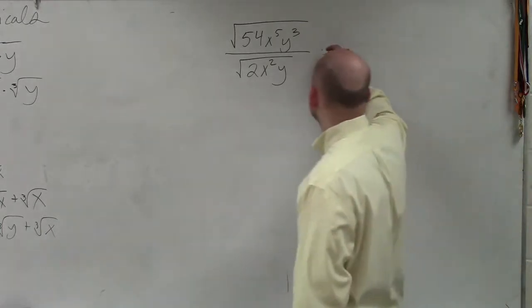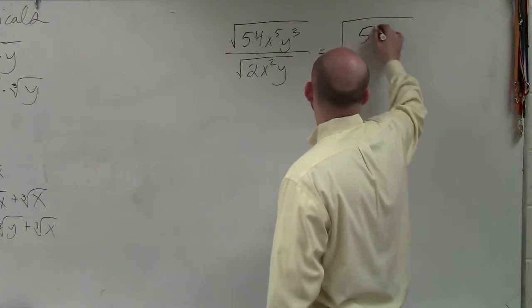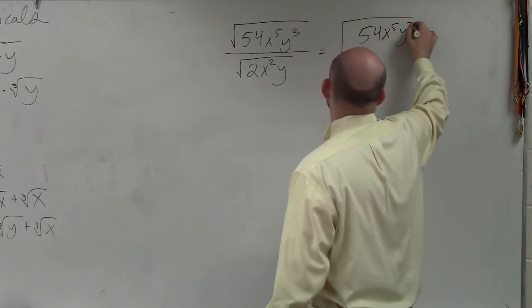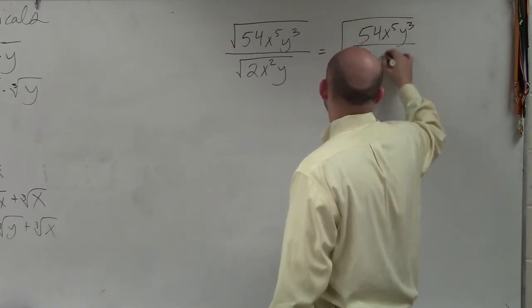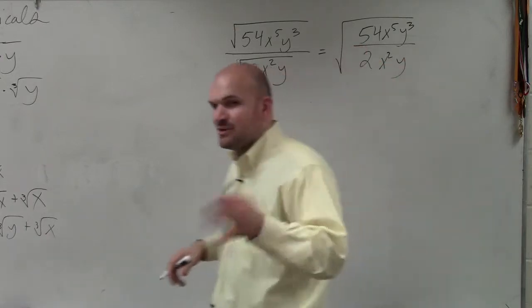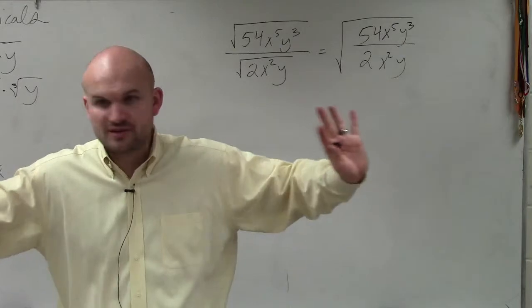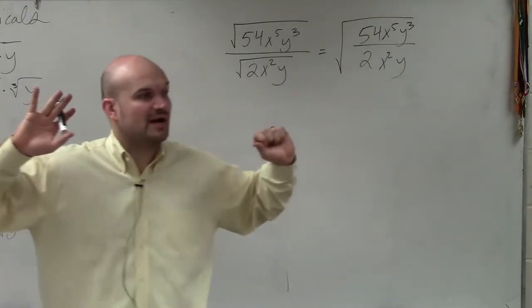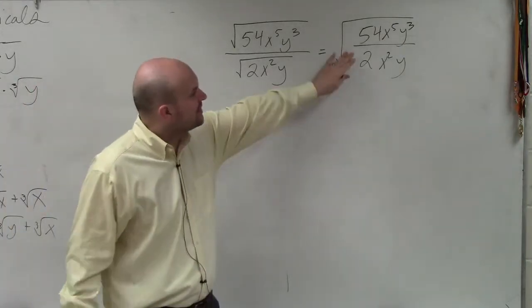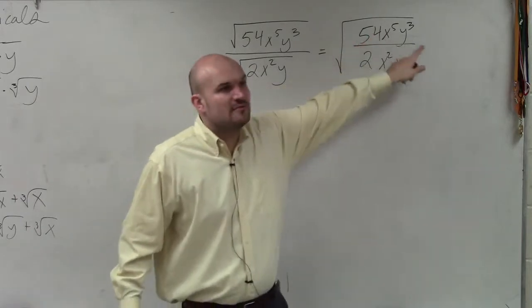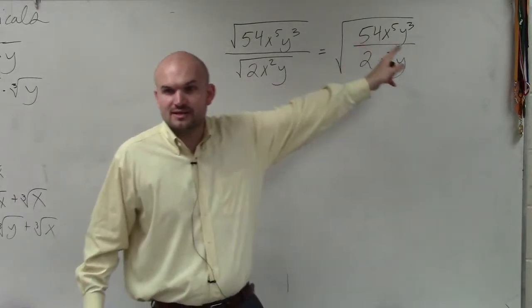So, therefore, I can rewrite this as the square root of 54x to the fifth y cubed divided by 2x squared y. Now, the reason why I do this, yes, you could simplify the top and simplify the denominator, right? That's perfectly fine, and that's actually probably the preferred way I'd recognize it. The reason why I'm doing it like this is because you guys should be familiar with simplifying a rational expression like this, right?